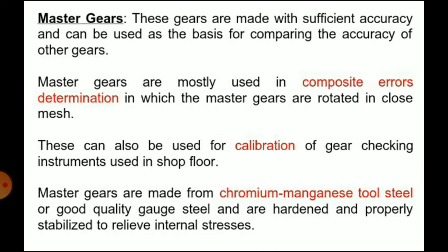Master gears are made with sufficient accuracy and are used as a basis for comparing the accuracy of other gears. They are mostly used in composite error determination, where the master gears are rotated in closed mesh. They can also be used for calibration of gear checking instruments on the shop floor. Master gears are made from chromium manganese tool steel or good quality gauge steel, and are hardened and properly stabilized to relieve internal stresses.